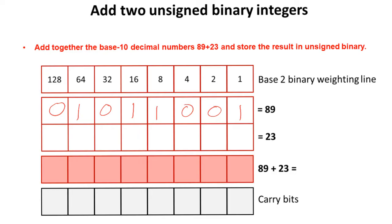We do the same thing for 23 and we get 0, 0, 0, we get 1 16, 0 8s and a 4 and a 2 and a 1. 16 plus 4 plus 2 plus 1 is 23.